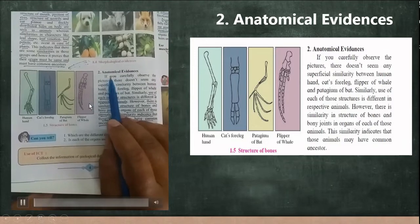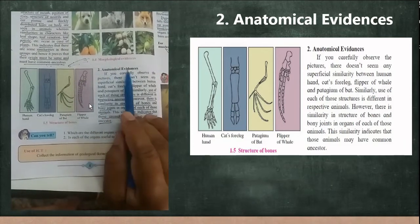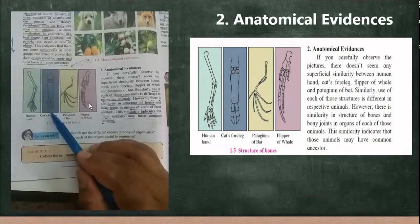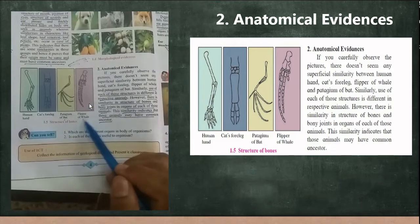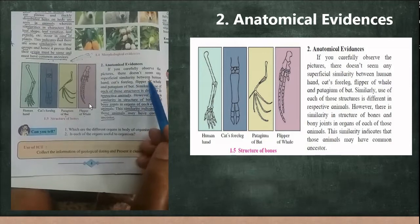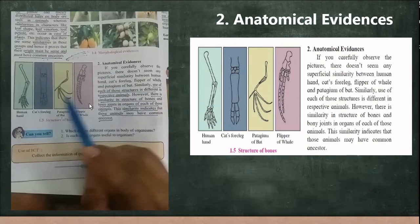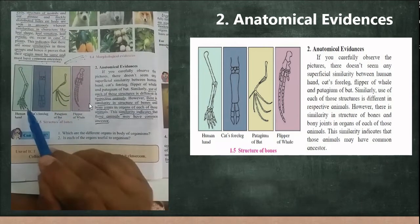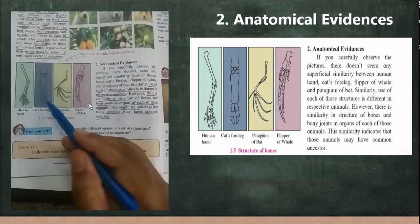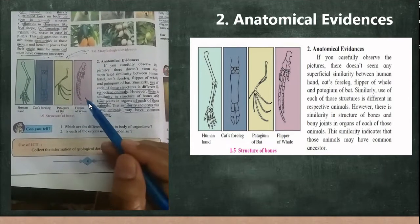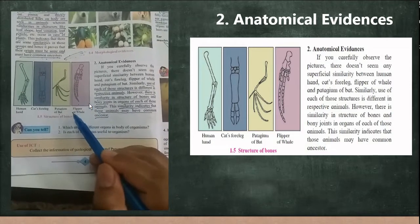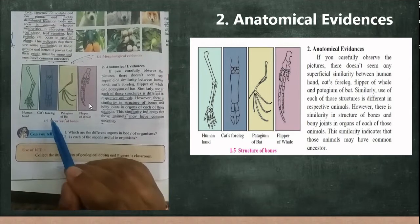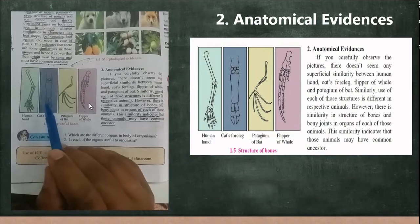The second evidence is anatomical evidence. Anatomy means the study of bones and internal structures. For example, look at the hand of a human, the foreleg of a cat, the patagium of a bat, and the flipper of a whale. If you examine these structures carefully, you will see certain similarities between them, even though the use of each structure is different in the respective animal.